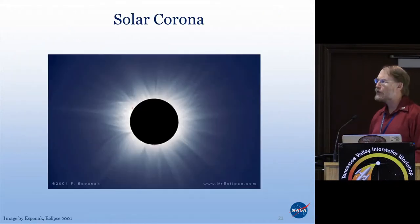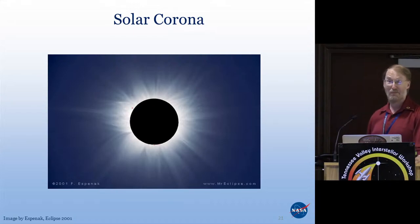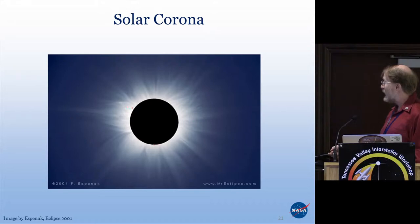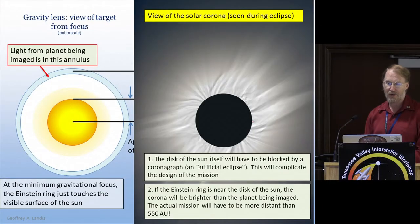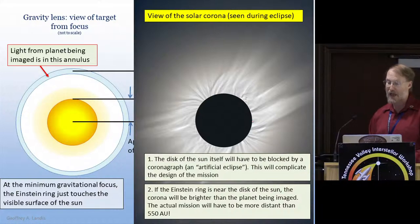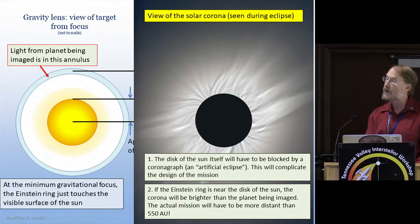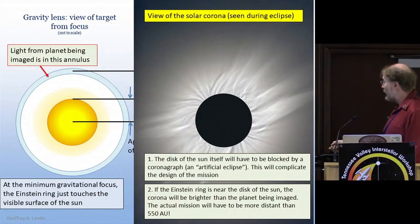But there's a difficulty: the solar corona. The Einstein ring has to be outside of the surface of the sun, but if it's outside the surface, there's still quite a bit of coronal light. So the first thing is we do need a coronagraph — that's going to complicate the mission. It's more than just an image detector aiming at the sun; you also have to block the coronal light. If you only blocked the sun itself, the corona would be brighter than the planet — you wouldn't see the planet. So you have to be more distant than 550 AU.